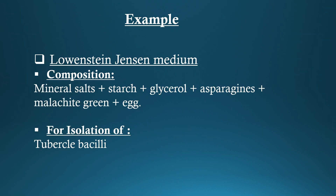Lowenstein Jensen Medium. Composition: Mineral Salts, Starch, Glycerol, Asparagine, Malachite Green, Egg — for isolation of Tubercle Bacillus.